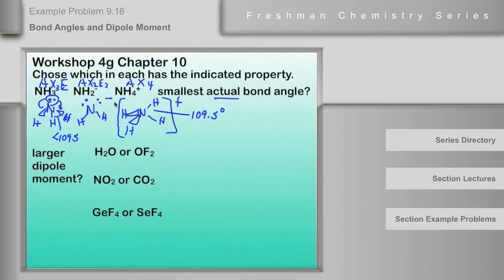So this angle right here is going to be less than 109.5 degrees. What's NH2 minus? With NH2 minus, we have two lone pairs. With two lone pairs pushing on the bonding pairs, this angle here is now going to be much less than 109.5. Two lone pairs reduces the HNH bond angle more than one lone pair. So the smallest actual bond angle will be that for NH2 minus because it has two lone pairs, whereas NH3 has one and NH4 plus has none.